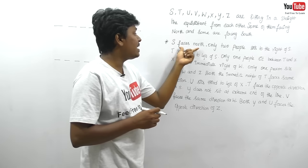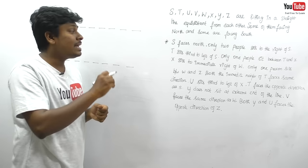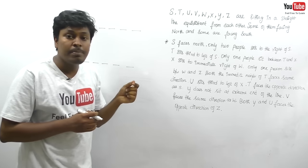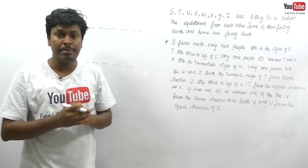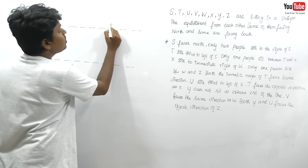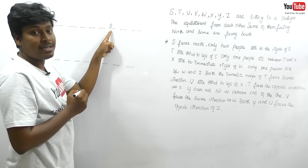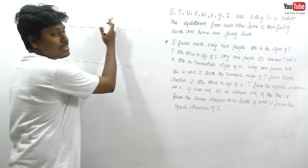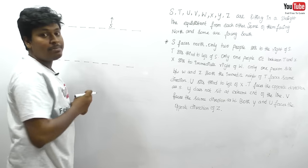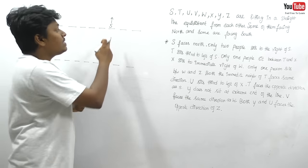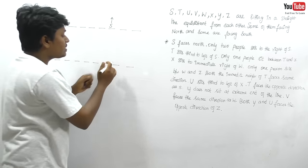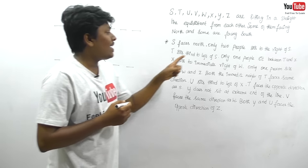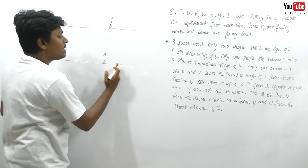S is facing north and to the right of S there is a gap of only 2 people — not 3, only 2. So S should come at position 6 from the left. If S faces north, S's right-hand side is toward the right end. Only 2 people can sit to the right of S, so we place S at the 6th position in both condition diagrams.